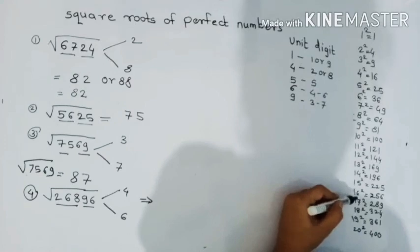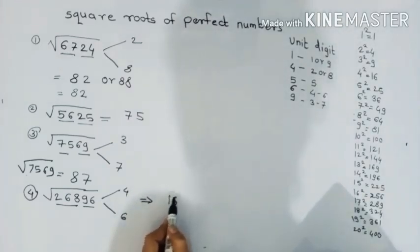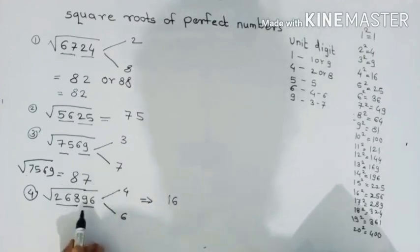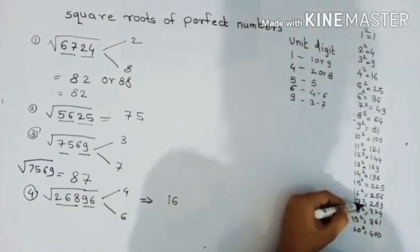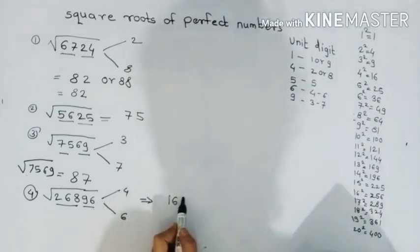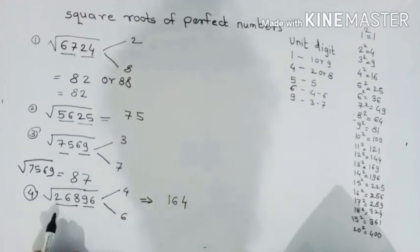What is the next thing? Who is 268, who is 256 and who is 289? Who is 256? What is the answer? 4. So 164, 26896 basically is 164.